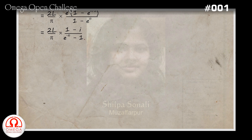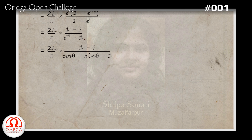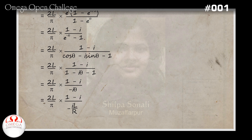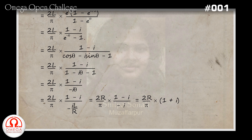Putting e^(minus i theta) equal to cos theta minus i sin theta, we get 2l by pi into (1 minus i) divided by (cos theta minus i sin theta minus 1). Since theta is very small, cos theta is approximately 1 and sin theta equals theta. Putting these values, the position of the center of mass on the Argand plane becomes 2l by pi into (1 minus i) divided by (minus i theta), or equivalently (1 minus i theta minus 1). Since theta equals l by r, the position becomes 2l by pi into (1 minus i) divided by (minus i l by r), which simplifies to 2r by pi into (1 minus i) divided by i, or 2r by pi into (1 plus i). Therefore, in Cartesian coordinates the position of the center of mass is 2r by pi, 2r by pi.